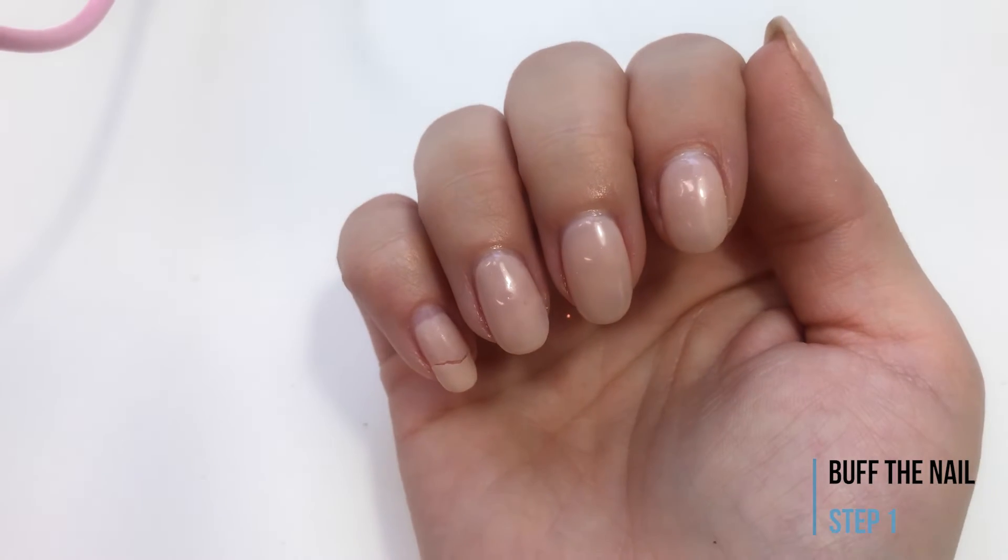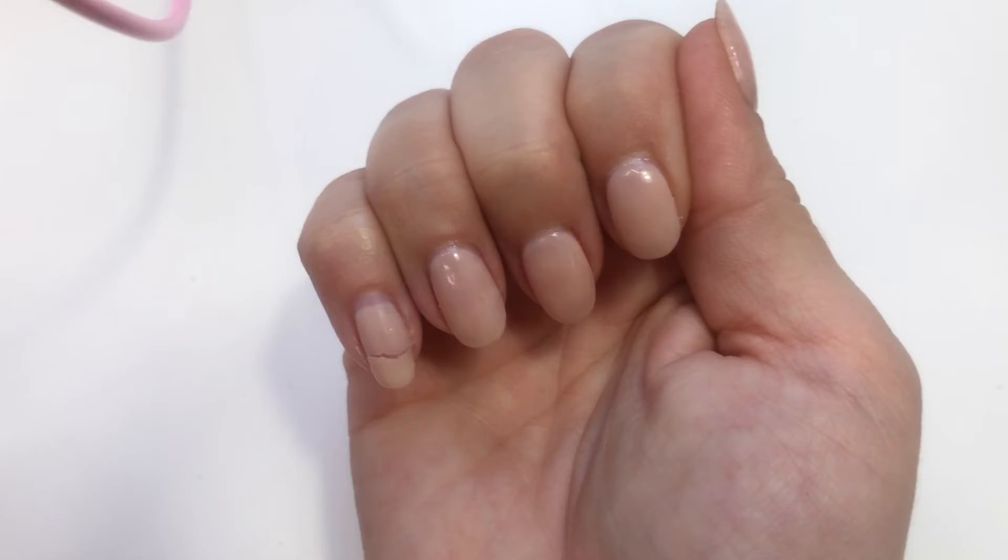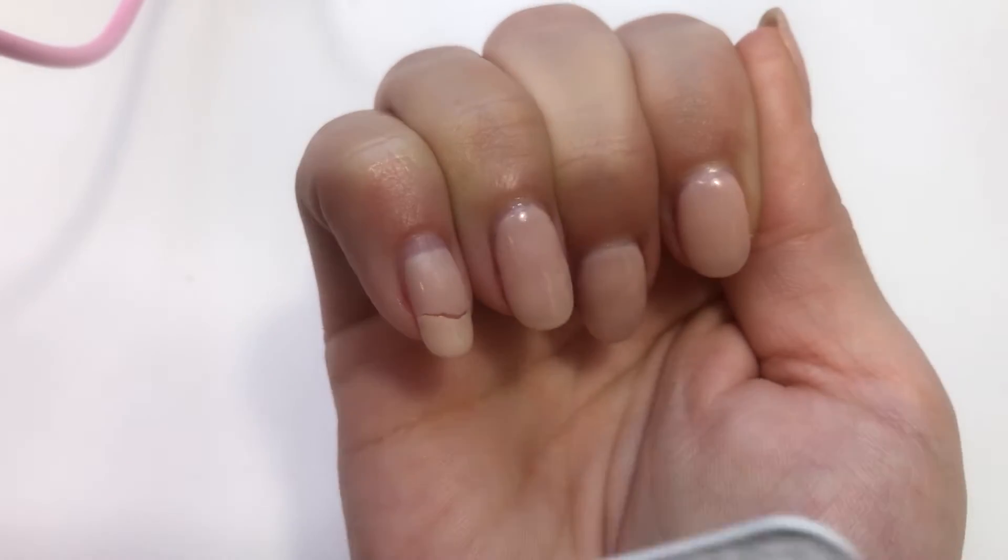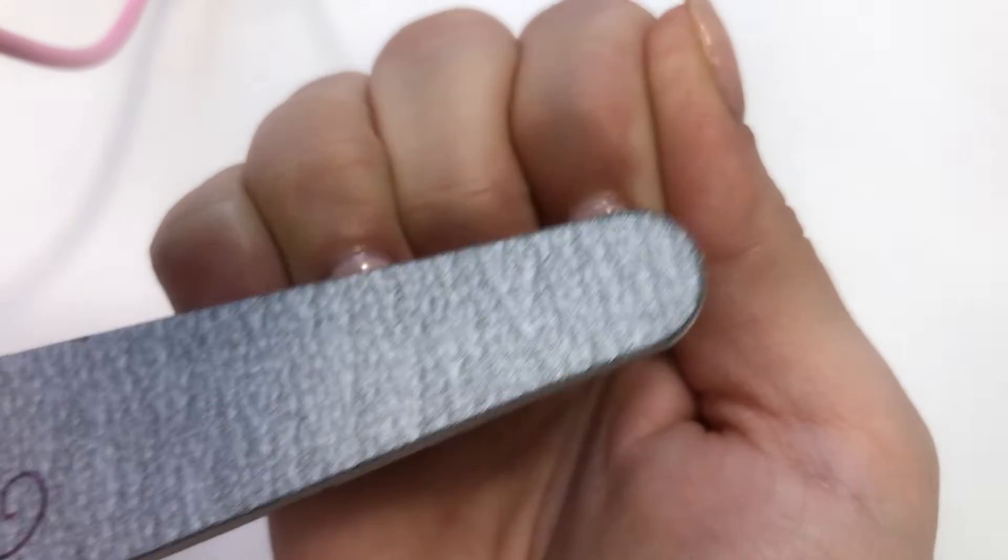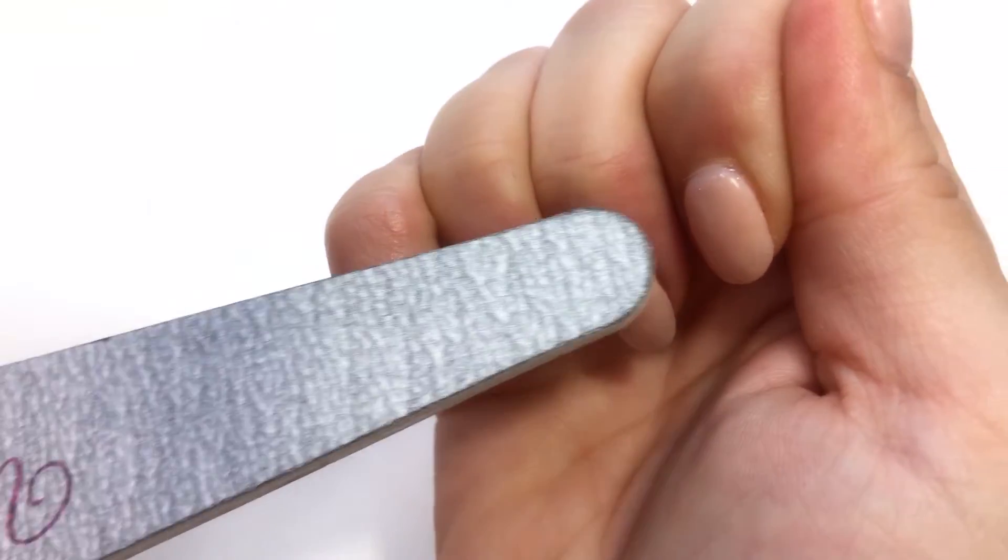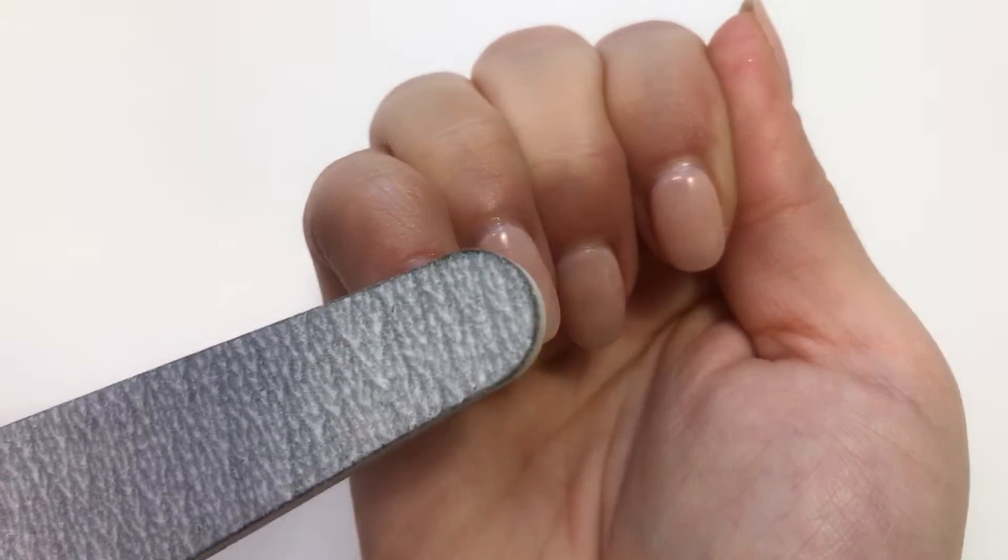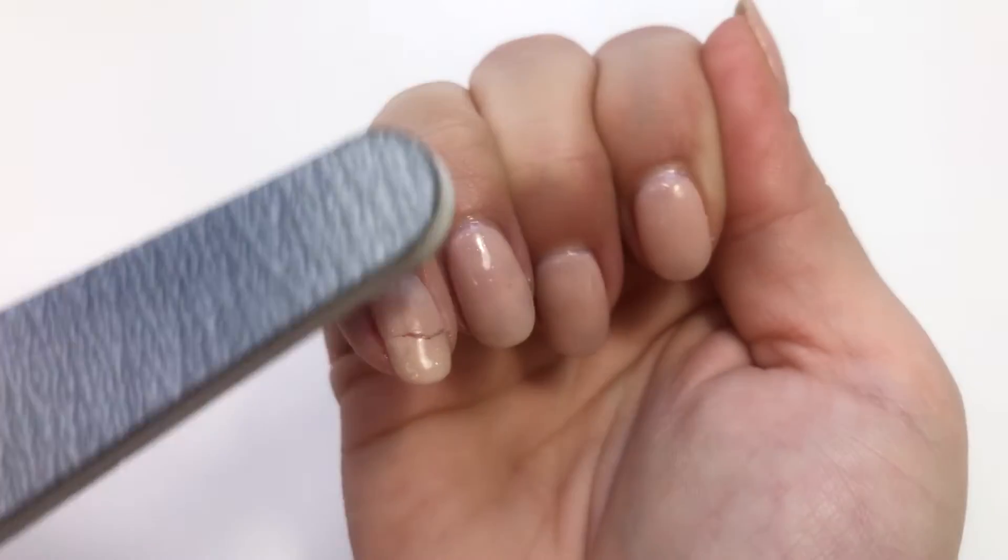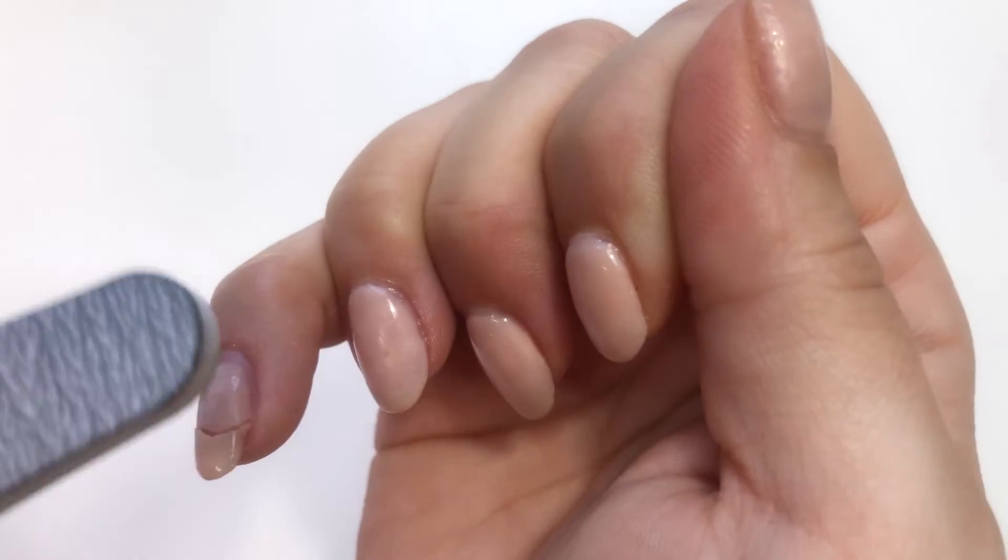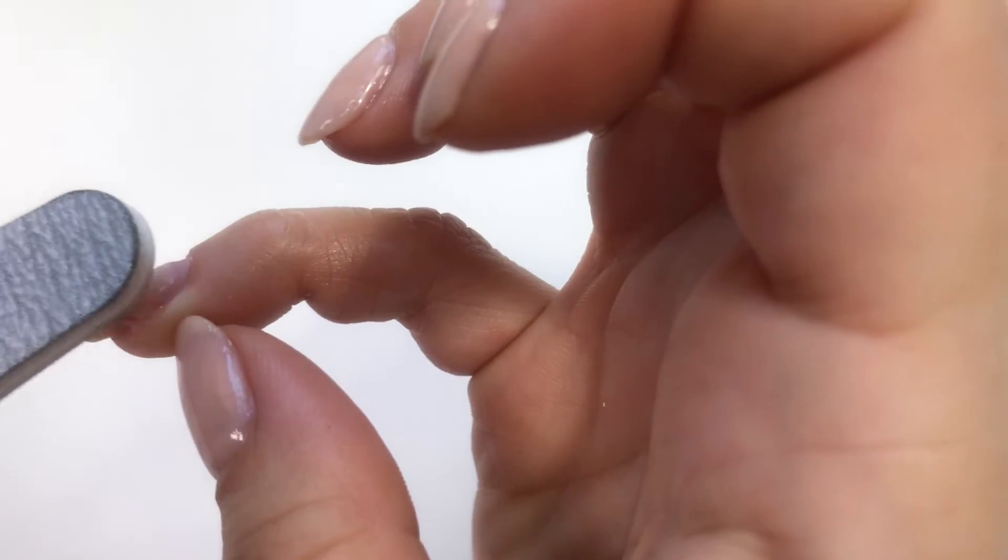I currently have gel polish on my natural nails so I'm gonna start off by taking the file and buffing off the shiny layer on the top. If you're doing this directly on your natural nails you can take a cotton pad, soak it in acetone and scrub your nail with it to remove the oils or you can use a file as I'm doing in the video. Just be careful and gentle with your natural nail. You just want to slightly buff and scratch the surface rather than file it.